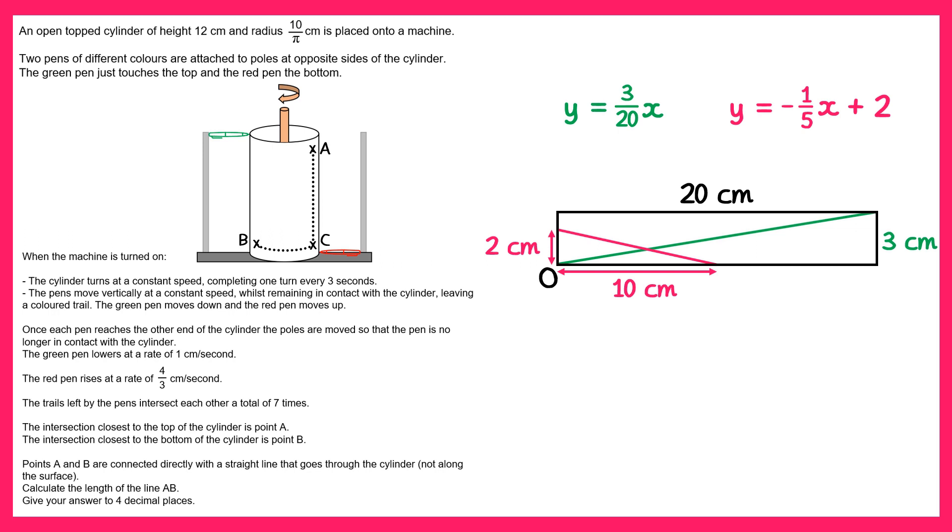Now if we solve these graphs simultaneously we'll find the coordinates of the crossing points. So 3 twentieths of x is equal to negative 1 fifth x plus 2. Let's multiply both sides by 20 first, that will give us 3x on the left and on the right negative 4x plus 40. If we add 4x to both sides we get 7x equals 40 and that gives you x equals 40 over 7. We can get y as well, it's probably easiest using the green equation. So y equals 3 twentieths of x which means that y equals 3 twentieths times 40 over 7 which simplifies quite nicely to just 6 over 7.